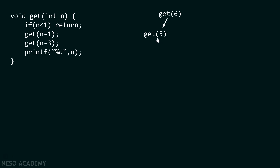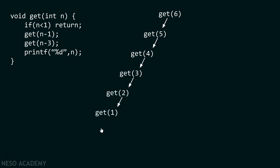As n equals five and the condition is again not satisfied, we call get(4) because five minus one is four, and control transfers from get(5) to get(4). Again, n equals four and four is not less than one, so we call get(3). Following this path: after get(3), get(2) is called, then get(1), and finally get(0). At this point n equals zero, zero is less than one, so the condition is satisfied and we start returning back to the point where we left off.